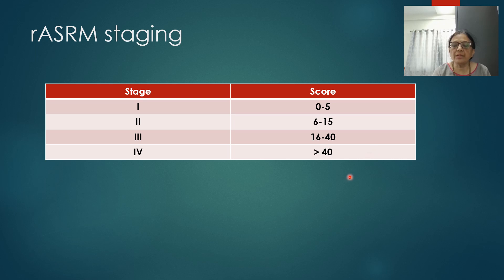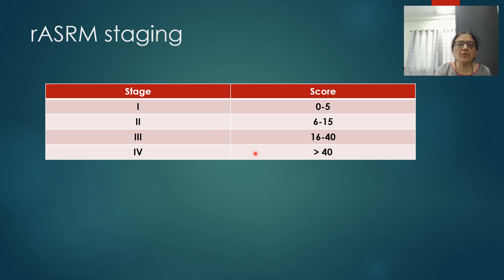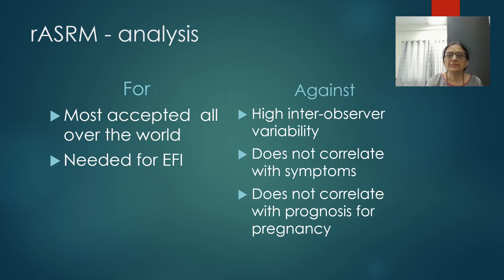When a laparoscopic surgeon is operating for endometriosis, they will declare endometriotic lesions as superficial or deep in the peritoneum and on the ovary, then assess the pouch of Douglas and adhesions over fallopian tubes and ovaries, and calculate the score. If the total score is 0–5 it is Stage 1; 6–15 is Stage 2; 16–40 is Stage 3; and more than 40 is Stage 4 endometriosis.